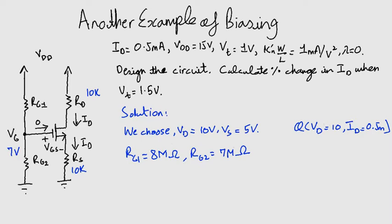Why did we choose mega ohms? We could have chosen kilo ohms. The reason is that this part of the circuit should present a large input resistance to a signal source that may be connected to the gate through a coupling capacitor.